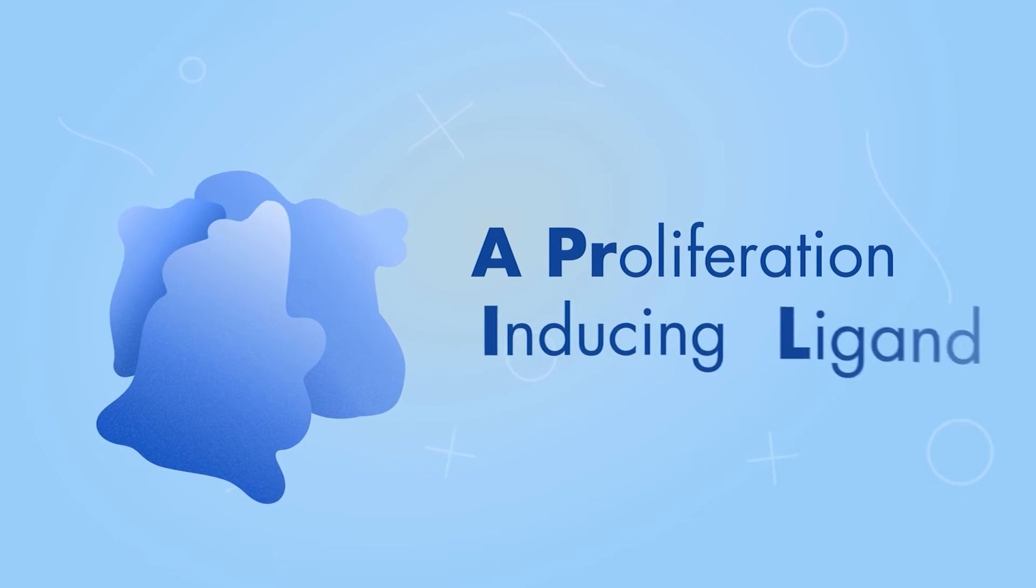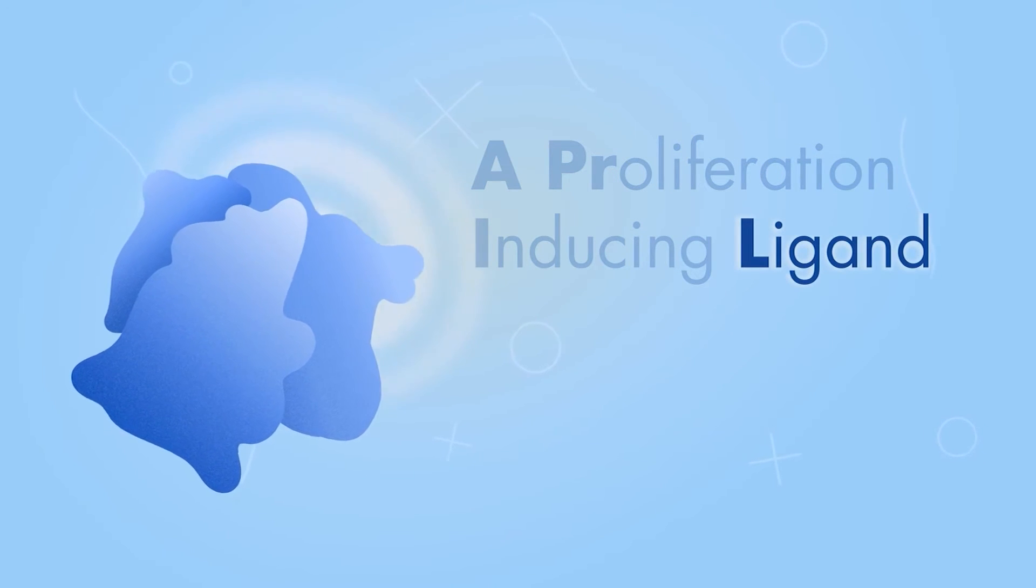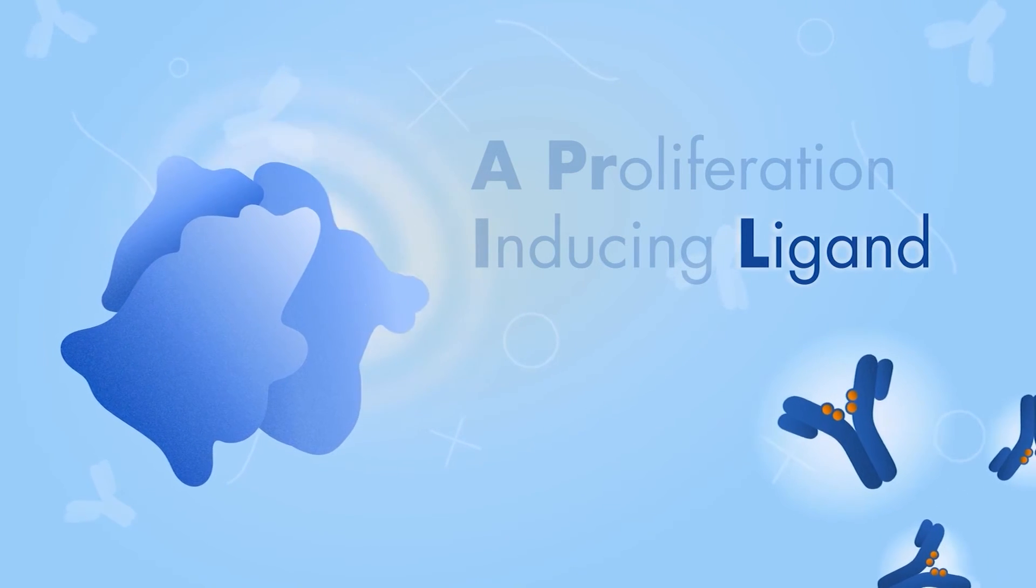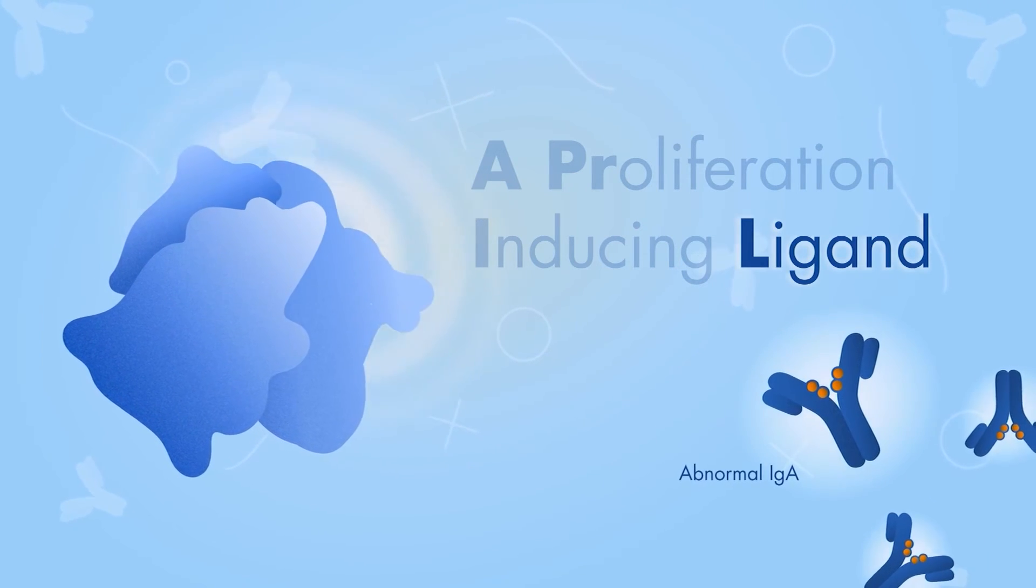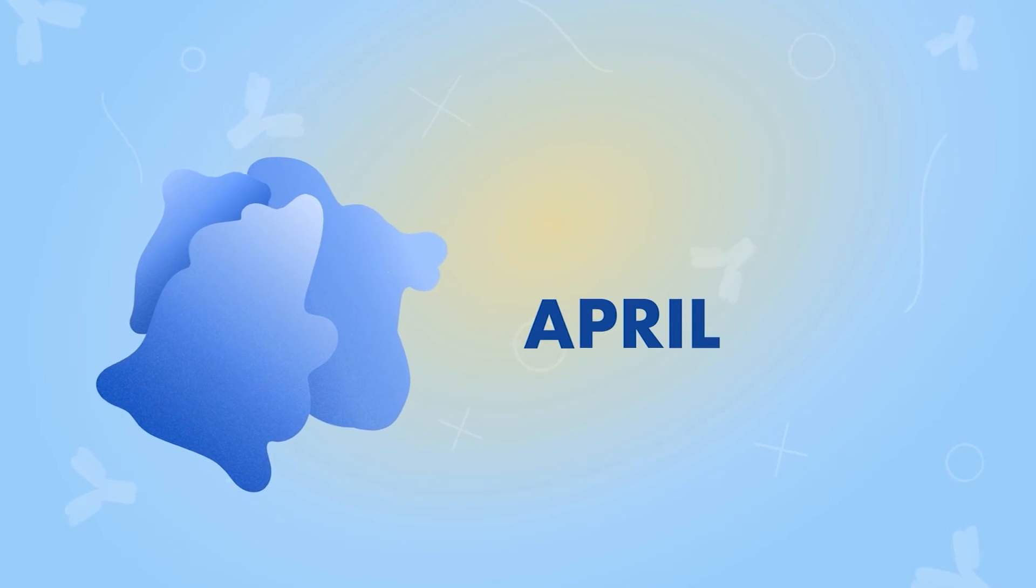A proliferation-inducing ligand can send signals to other proteins in the body, allowing the body to create antibodies. In the case of IgAN, it can signal to make abnormal IgA and autoantibodies. This ligand is also called APRIL for short.